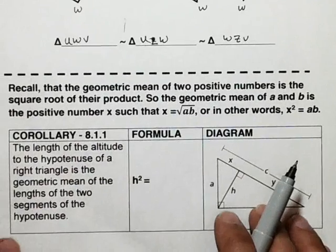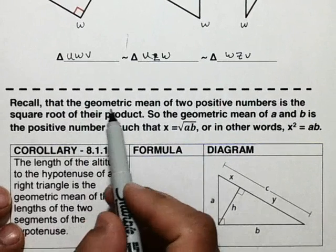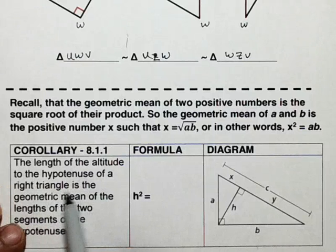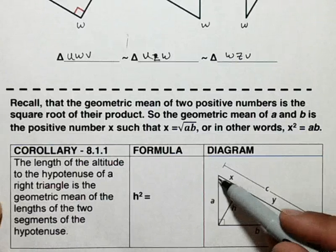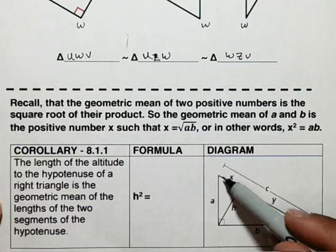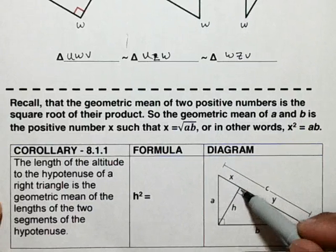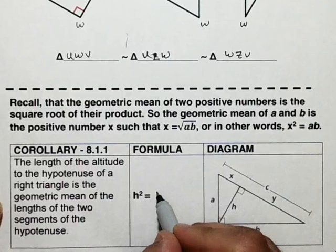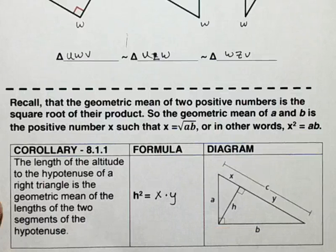Using right triangles and geometric mean: the length of the altitude to the hypotenuse of a right triangle is the geometric mean of the lengths of the two segments of the hypotenuse. So if I have my right triangle and my height H, then H squared is going to be equal to the distance of X times the distance of Y.